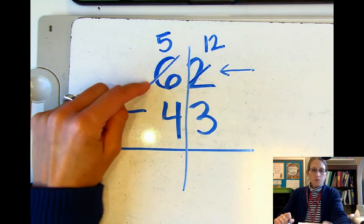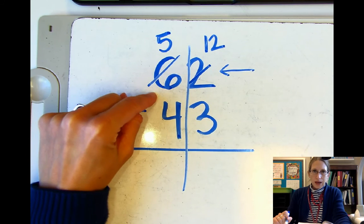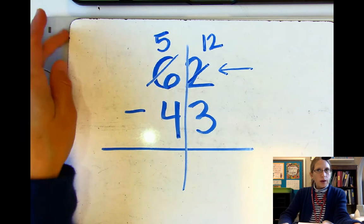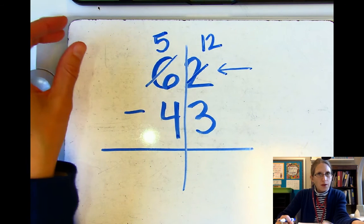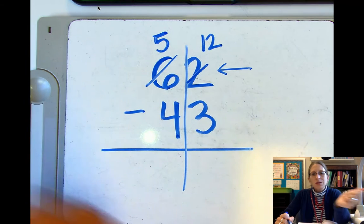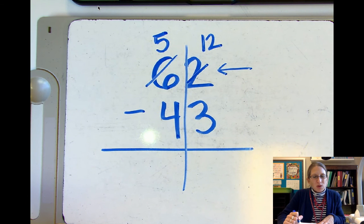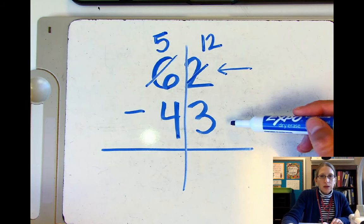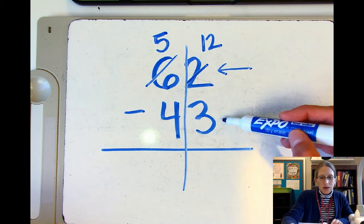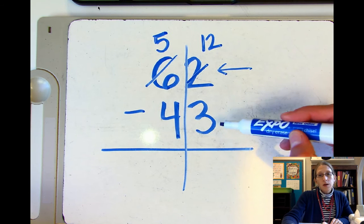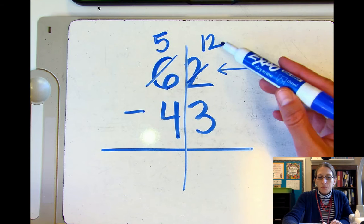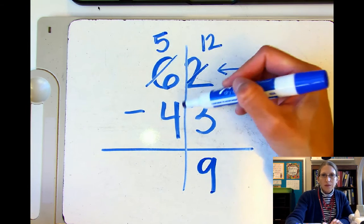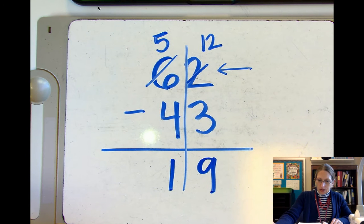We are taking one of these tens and putting it over here. This used to be called borrowing — some parents may remember that. Renaming, or regrouping, is kind of the same thing; we're just not changing anything, just giving it a different name. Now we have five tens and 12 ones. We can subtract in the ones place: 12 minus three — three plus seven makes ten, and two more — so this is nine. Then five tens minus four tens is one ten. That is our answer.